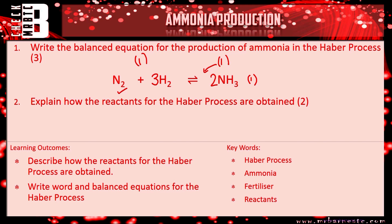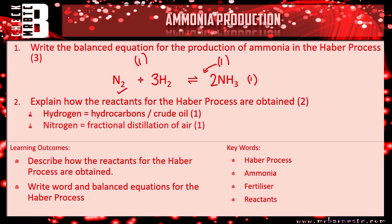For question two, explain how the reactants of the Haber process are obtained. Hydrogen — you should remember it's from crude oil, or hydrocarbons; you could say either of those to get the one mark. And your nitrogen is from fractional distillation of air. So remember to get that fractional distillation in.